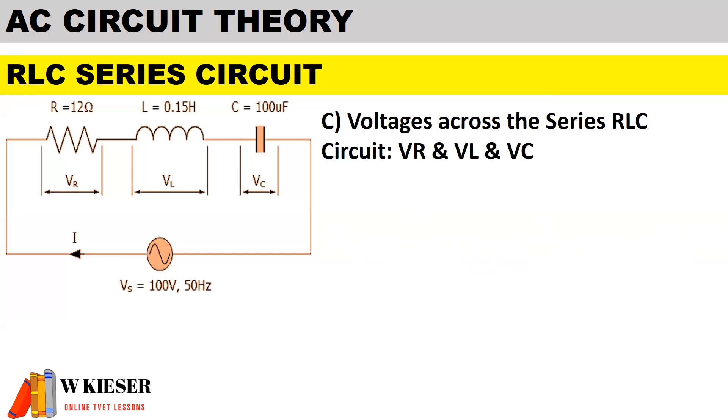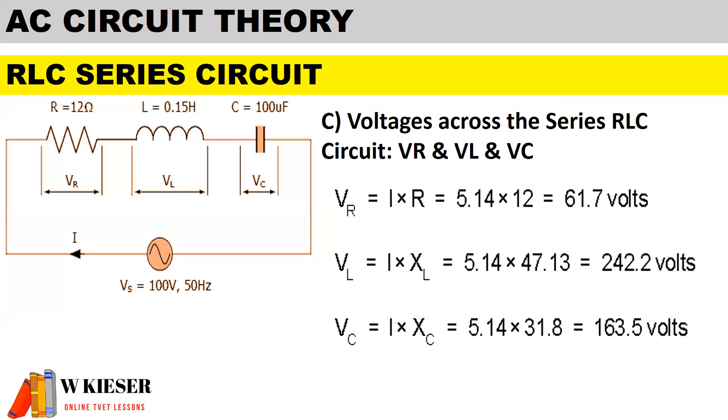In part c, we need to calculate the volt drop across each component. Therefore the volt drop across the resistor, the volt drop across the inductor, and the volt drop across the capacitor. Remember current remains the same in a series circuit. Therefore the current is 5.14 multiplied by the resistance of 12 ohms, multiplied by the inductive reactance of 47.13, multiplied by the capacitive reactance of 31.8. Therefore the volt drop across each component. Now you'll notice that the sum of the volt drops does not equal the supply voltage.